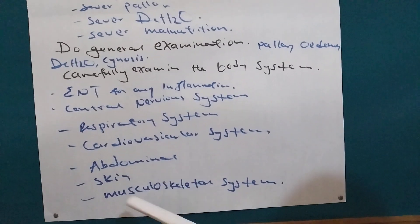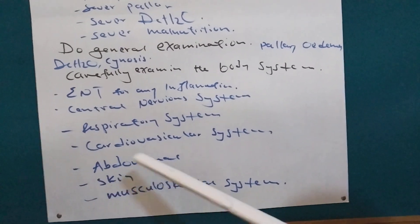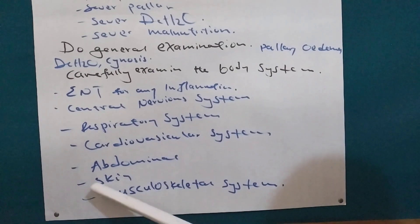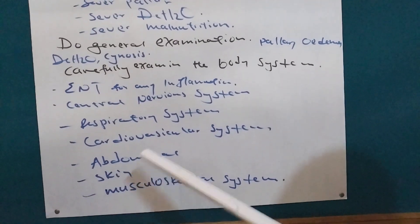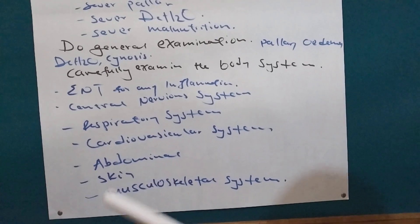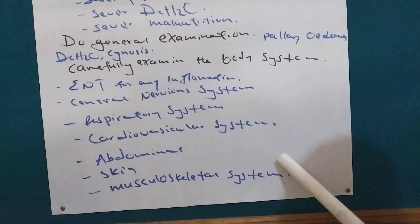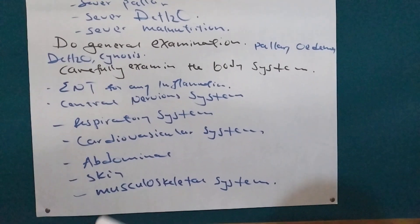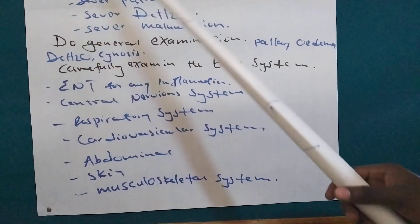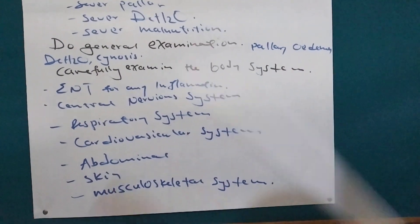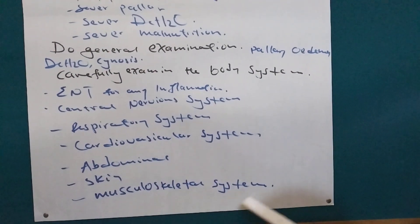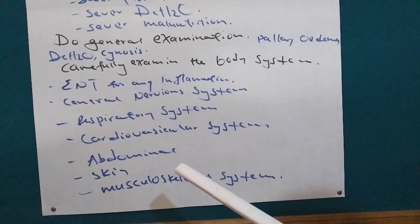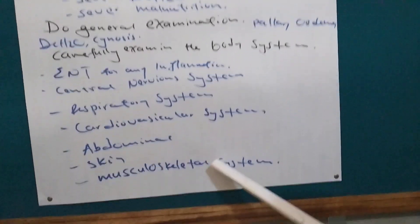Then we examine the skin. In the skin we will see signs of dehydration, check if there is a wound, or edema. Then we examine the musculoskeletal system. In this system we assess if the person is able to walk. If we see the danger sign that the person cannot sit or stand alone, we examine further to find the causes and manage accordingly.